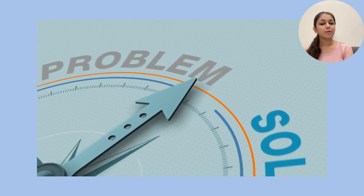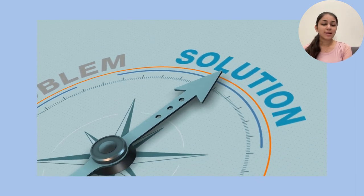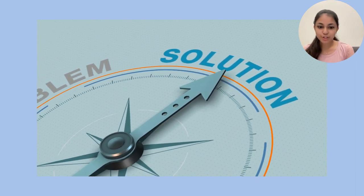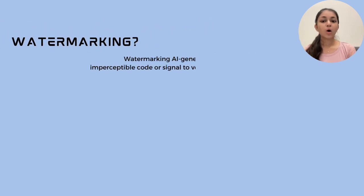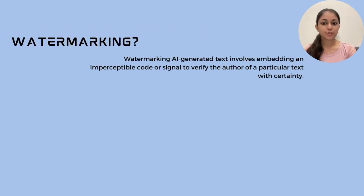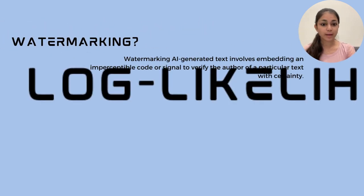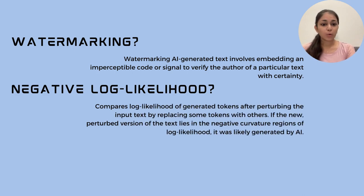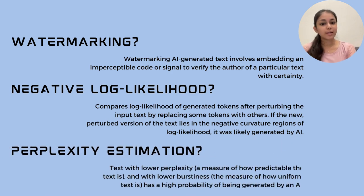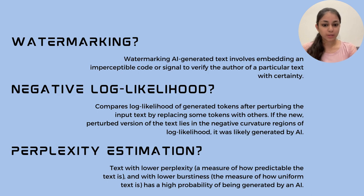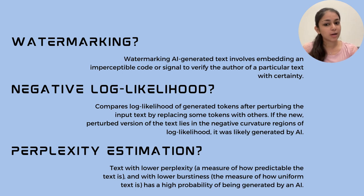Now that does not sound right, does it? Now that we have established the problem, let us look at some of the solutions out there. Watermarking was a technique introduced by researchers at the University of Maryland, which involves encoding particular tokens as watermarks so we can detect whether a language model produces those watermarked tokens and thereby identify whether a piece of text was generated by that particular language model.